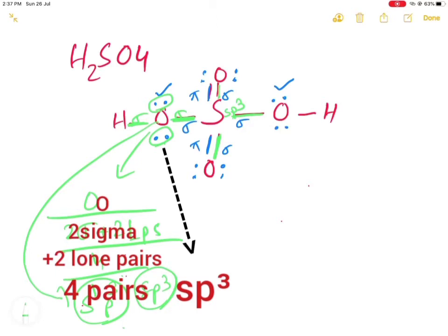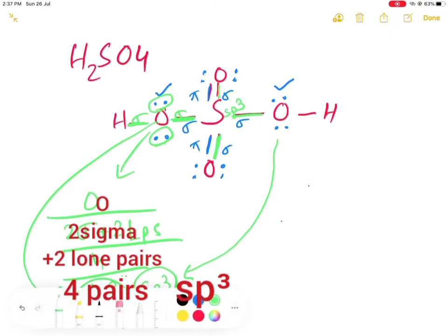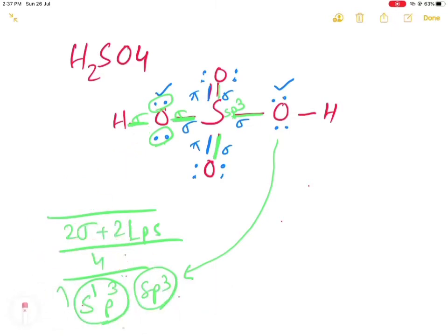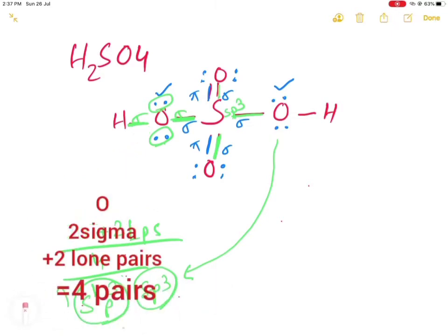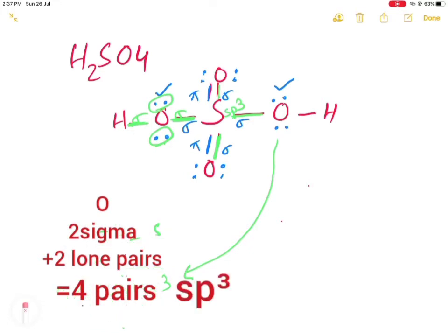Similarly, for this oxygen, the type of hybridization will also be sp3. So these two oxygen atoms are sp3 hybridized.